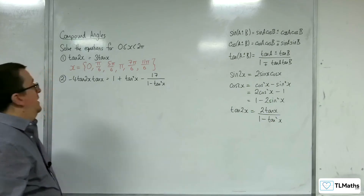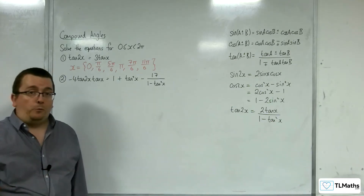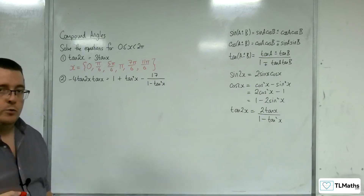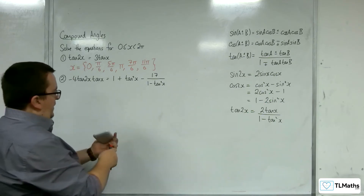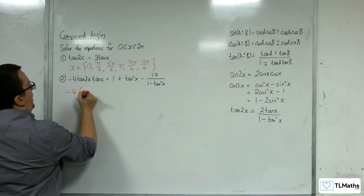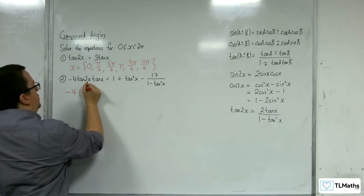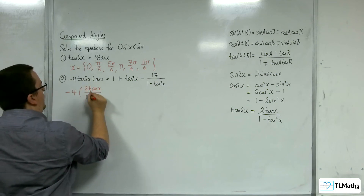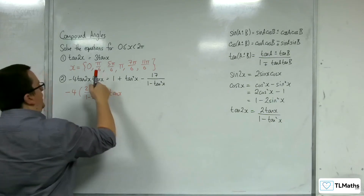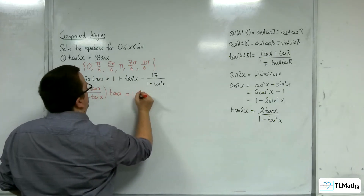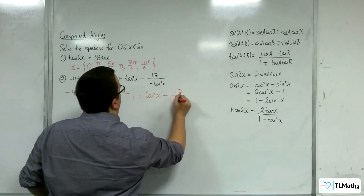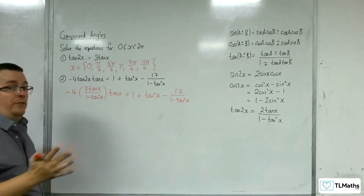Now let's have a look at question number 2. This looks absolutely ghastly, but it should all come out nicely. So we have minus 4 times tan of 2x, which is the 2 tan x over 1 minus tan squared, times by the tan x on the left-hand side. And that's equal to the 1 plus tan squared, take away 17 over 1 minus tan squared x on the right-hand side.